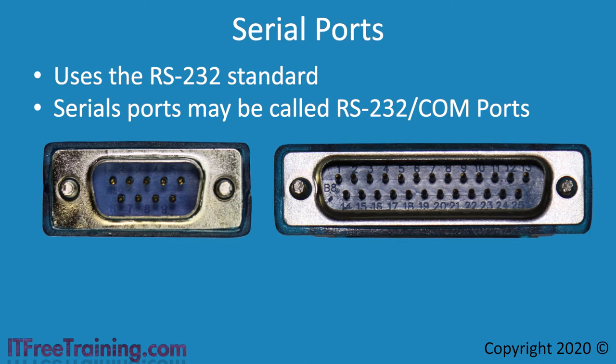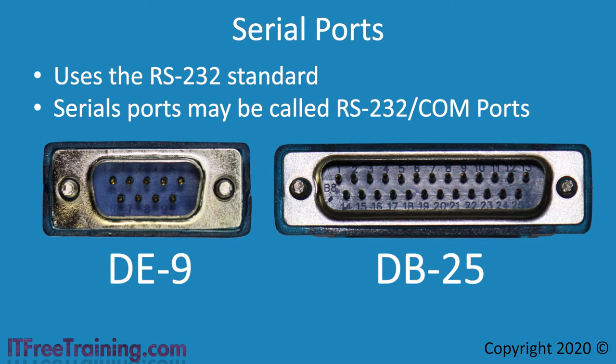The serial ports themselves are called DE-9 and DB-25. The D refers to the shape of the connector, the letters E and B refer to the size, and the number at the end refers to the number of pins. To fully meet the RS-232 standard, the serial port required 25 pins. Both connectors use serial communication, meaning only two pins are required for data transfer — one to transmit and one to receive — so both have the same number of data pins.